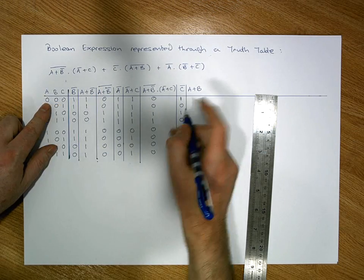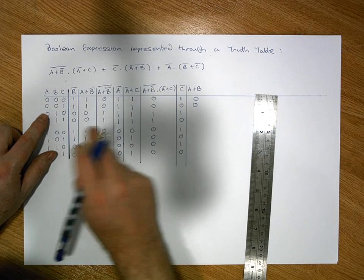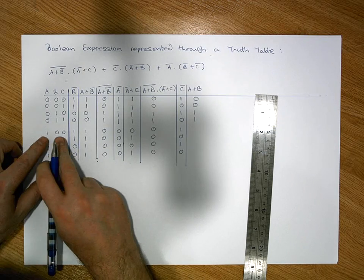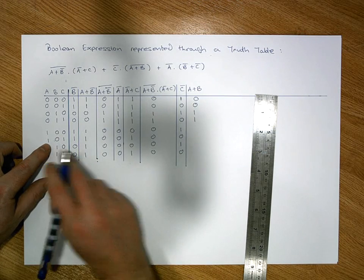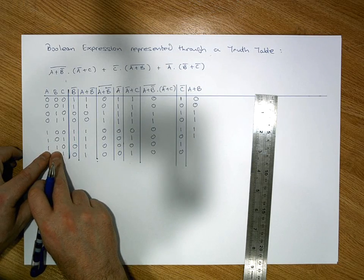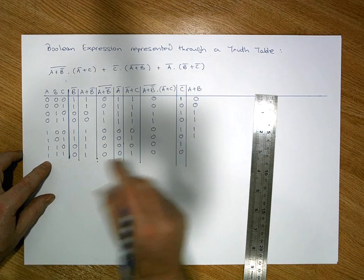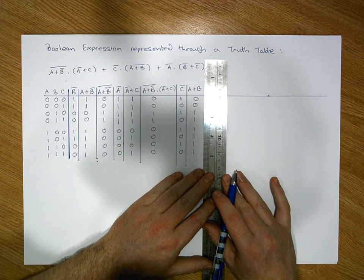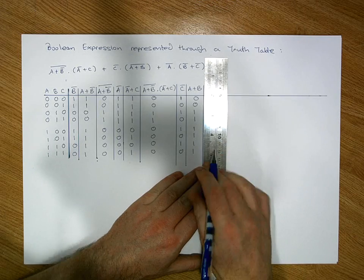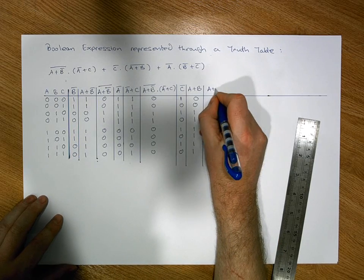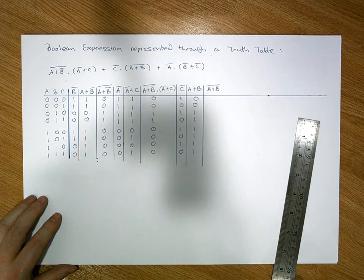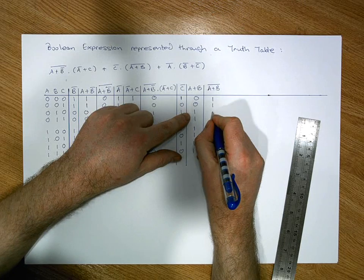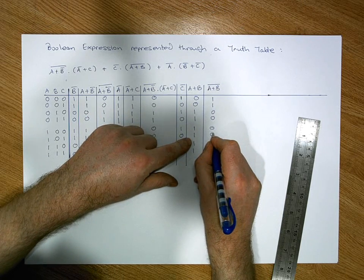Building the A OR B column: simultaneously zero → 0; simultaneously zero → 0; not simultaneously zero → 1; 1; not simultaneously zero → 1; 1; not simultaneously zero → 1; 1. That gives us A OR B. Now we negate those values to get (A OR B)̄: 1, 1, 0, 0, 0, 0, 0, 0.